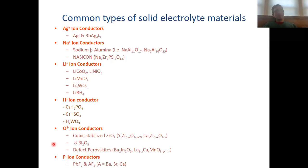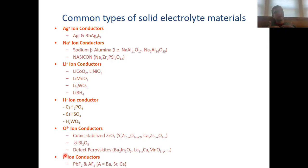There are relatively few anion conductors relative to cation conductors. One explanation is that anions tend to be larger just because they are negatively charged, which increases the ionic radius. The only known anion conductors are O2-minus ion conductors and fluoride ion conductors, which you can explain with size arguments — fluoride ions are very small, and O2-minus ions are only slightly larger.